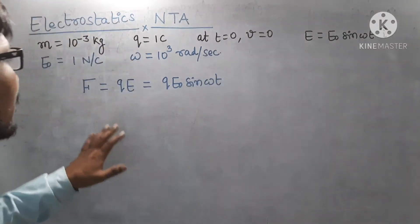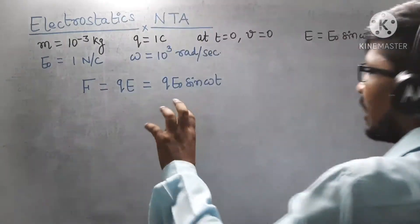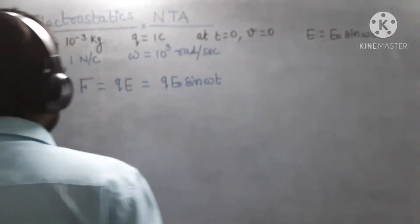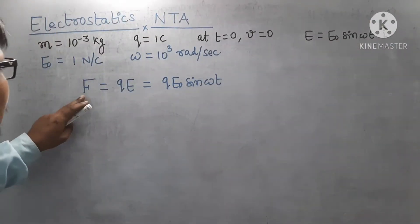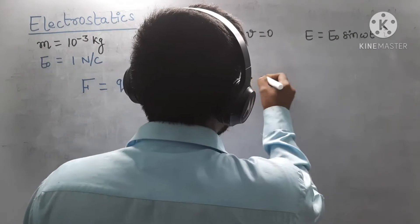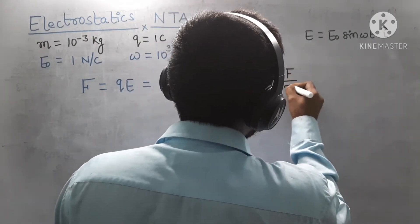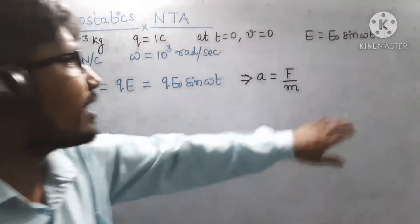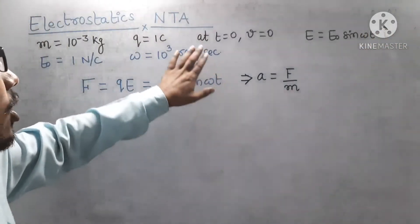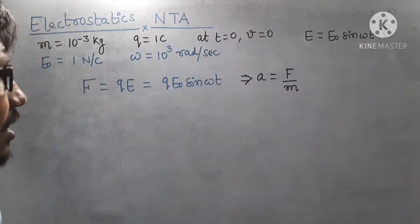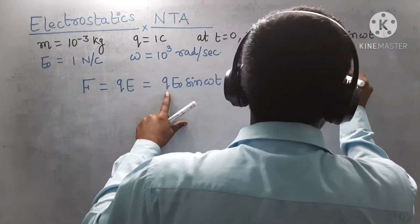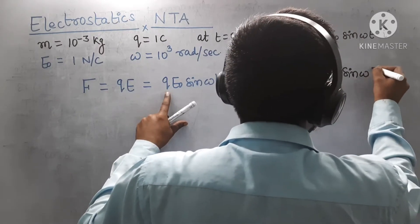As you can see, the force is a variable force — it changes with time. So if you want to find the velocity, you first convert this force into acceleration. Acceleration = Force / Mass. The direction of the force is along the x-axis because the electric field is also along the x-axis, and the particle was initially at rest. So acceleration = QE₀ sin(ωt) / m.